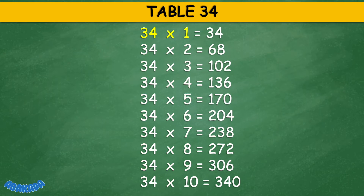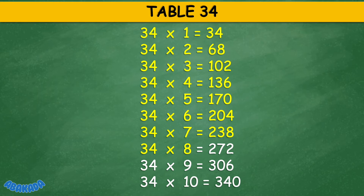Table 34: 34 times 1 equals 34, 34 times 2 equals 68, 34 times 3 equals 102, 34 times 4 equals 136, 34 times 5 equals 170, 34 times 6 equals 204, 34 times 7 equals 238, 34 times 8 equals 272, 34 times 9 equals 306, 34 times 10 equals 340.